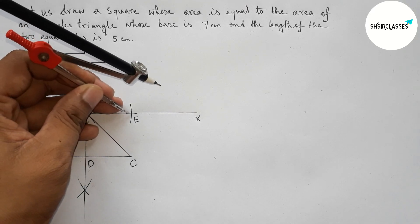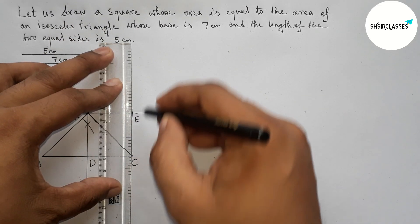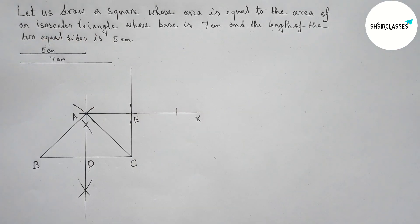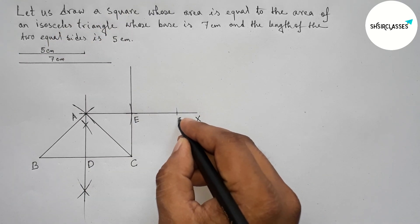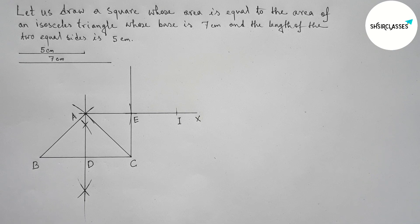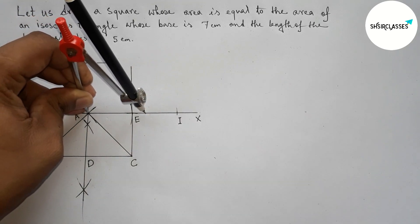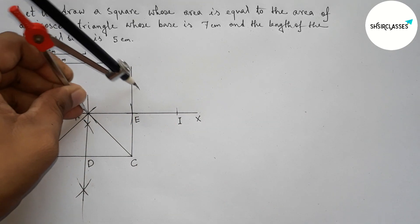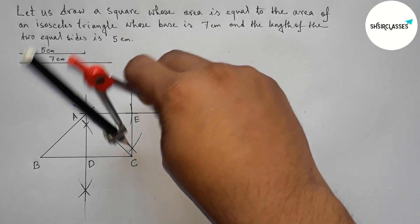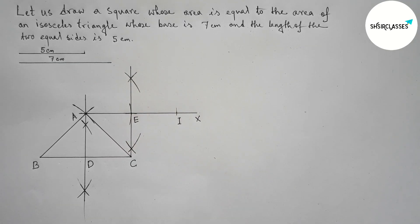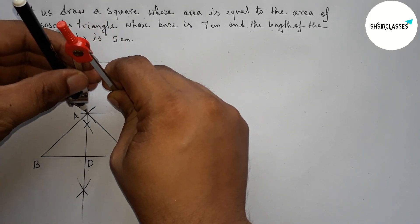Taking the length AD, placing the compass on point E, and cutting to mark points. Joining C and E and extending it — CE equals AD. Taking point I here. Bisecting line AI: placing the compass on point A and taking greater than half of AI, drawing arcs. Placing the compass on point I and cutting. The extension of CE is perpendicular to line AI.